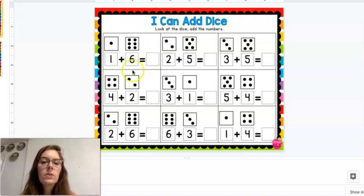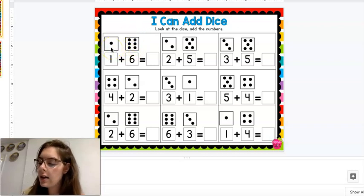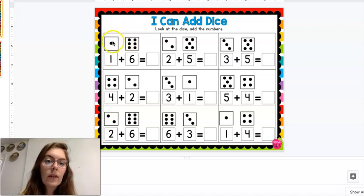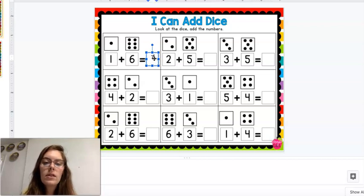We're going to look at this first one up here. We look 1 plus 6. We see 1 dot and then we see 6 dots on the dice. So we can count 1. We're going to count all the dots: 1, 2, 3, 4, 5, 6, 7. So I counted 7 dots. Then I can write my number 7.